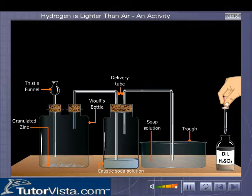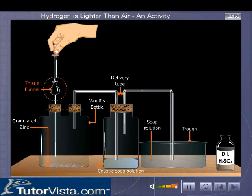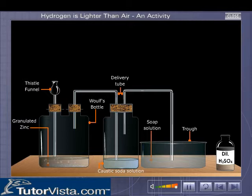Acid is dropped into the Woulf's bottle through the thistle funnel. The hydrogen gas formed is made to pass through the caustic soda solution so that it becomes free from acid. The gas is then passed through soap solution taken in the trough.